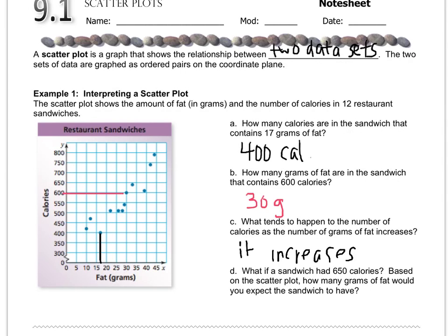What if a sandwich had 650 calories? So we go to 650 and it would be somewhere over here. So you would say, well, that's about 40 grams of fat.